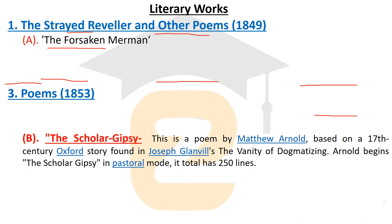The Scholar Gipsy is another very important work by Matthew Arnold. It is a poem based on a 17th-century Oxford story found in Joseph Glanvill's work The Vanity of Dogmatizing. Arnold begins the Scholar Gipsy in a pastoral mood and the poem has a total of 250 lines. It is a kind of pastoral poem.